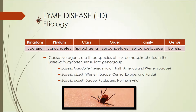There are three different species: Borrelia burgdorferi sensu stricto, which is found in North America and Western Europe; Borrelia afzelii, which is in Western Europe, Central Europe, and Russia; and Borrelia garinii, which is in Europe, Russia, and Northern Asia. For the purposes of this presentation, we will focus on Borrelia burgdorferi.